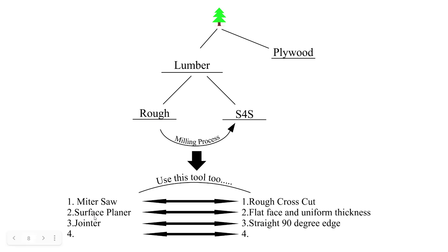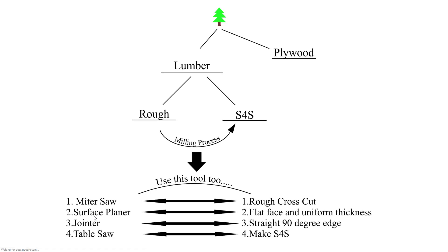After that, we go to the jointer and make a straight 90-degree edge. This is one of the most important parts to ensuring the board can be safely cut on the table saw — we must have a flat face facing down and a straight 90-degree edge against what's called the fence. The last step is to go to the table saw and make our board S4S.